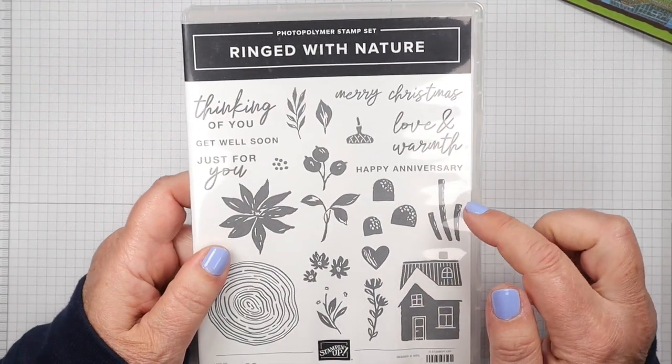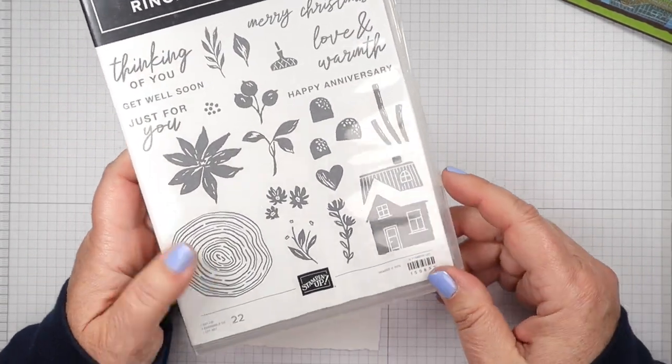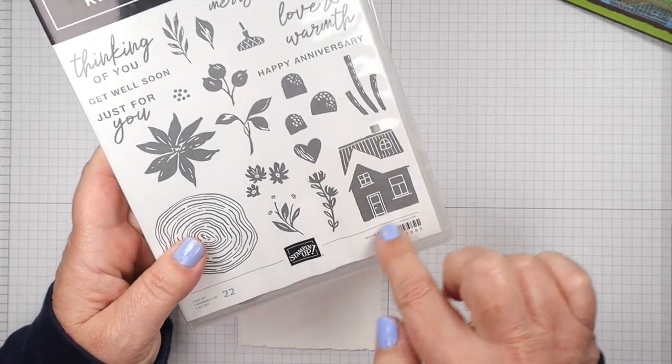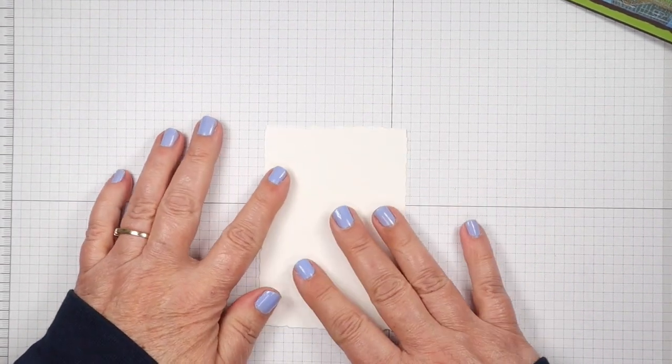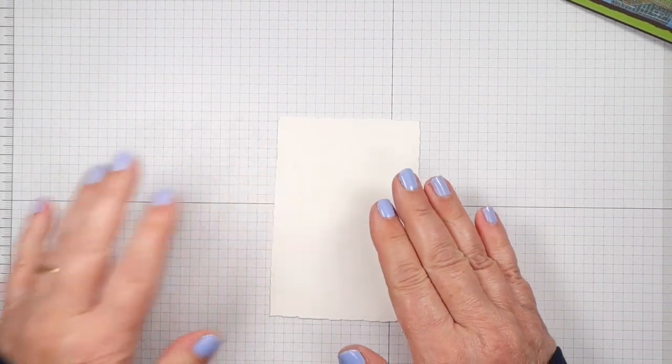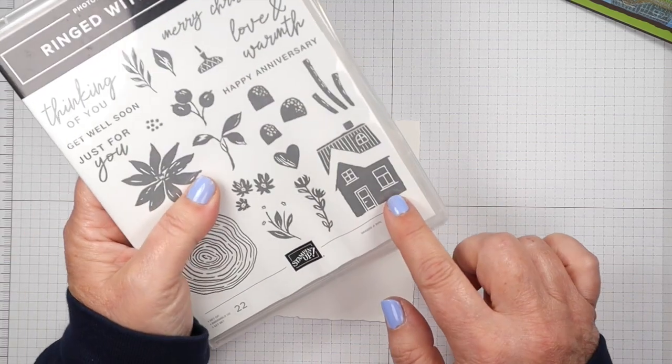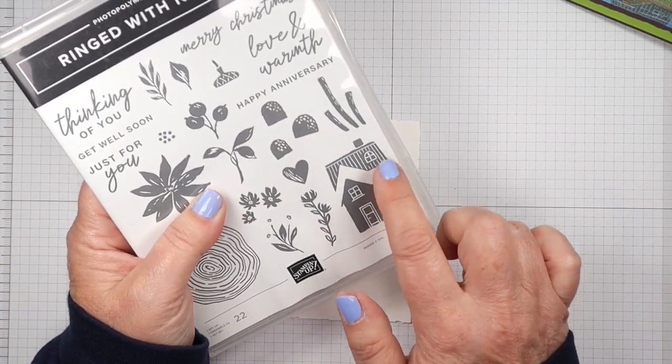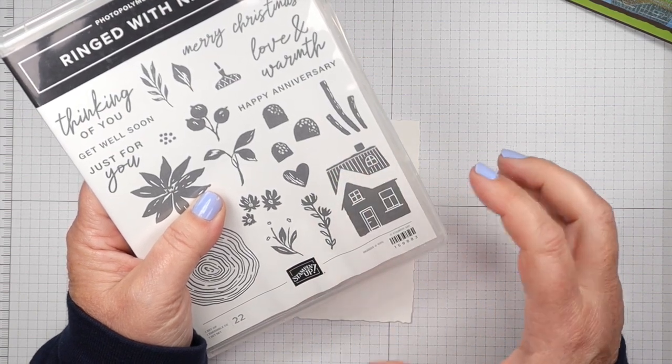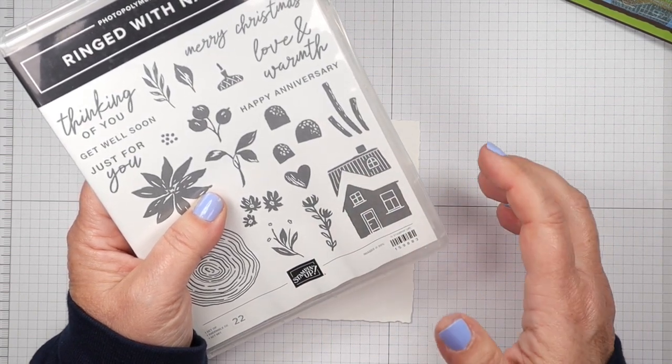I'm using the Ringed with Nature stamp set and I'm using this house today for our project. That house is so easy to use because it is in two pieces. So that house is one stamp and then the roof is another. So it's easy to stamp these and not have to do a lot of coloring.